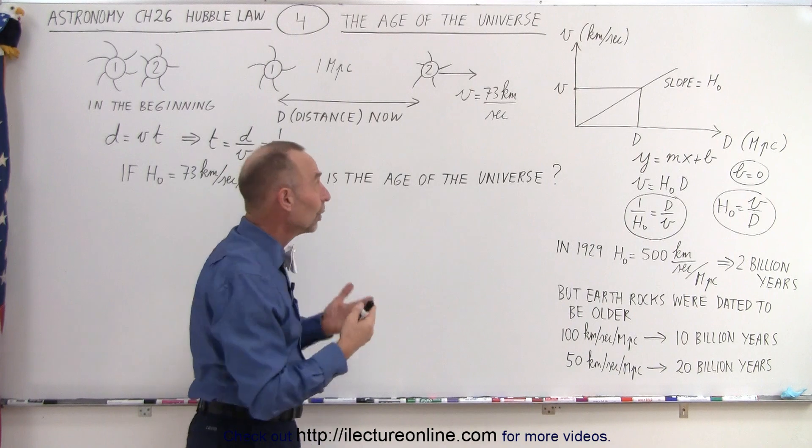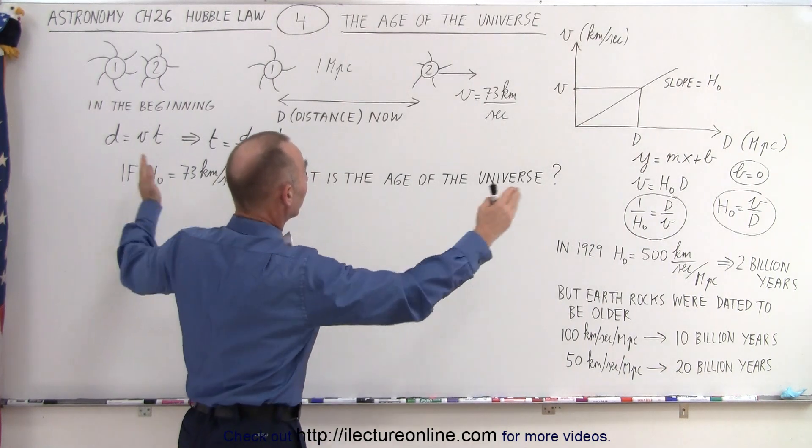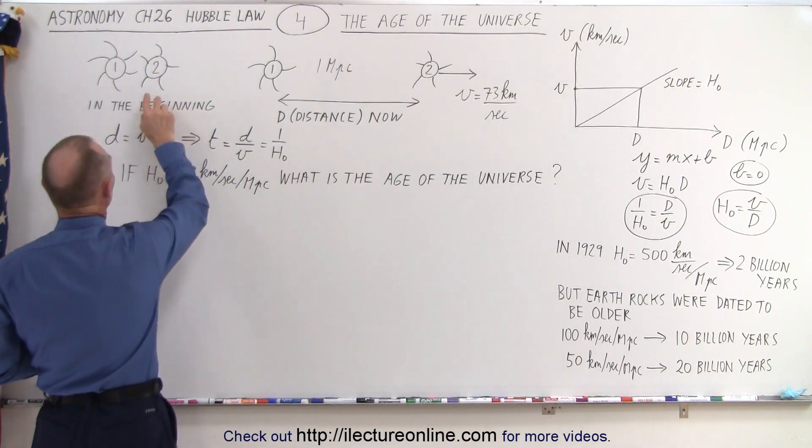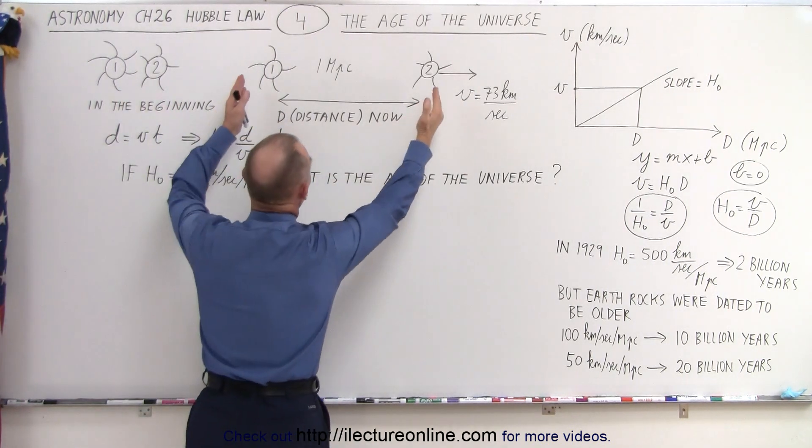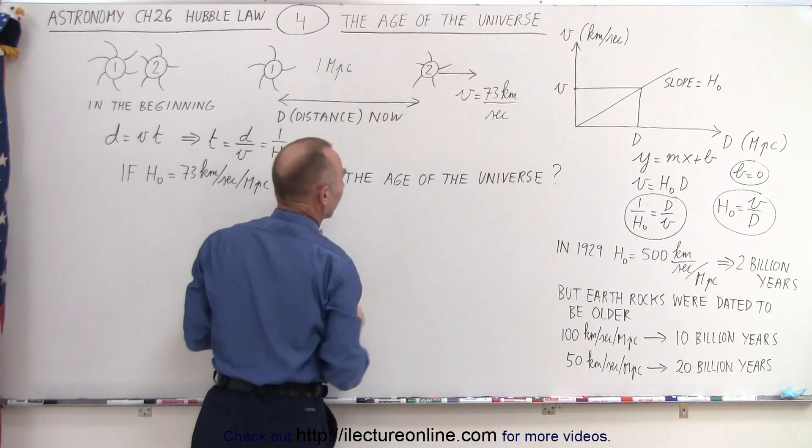Now, the Hubble constant relates to how fast things are moving apart from one another. If in the beginning of the universe, two galaxies were really close together, and today they're this far apart, moving this fast from one another...